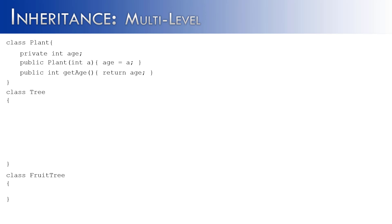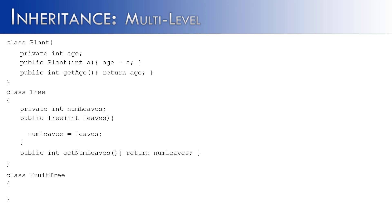Next, we create the tree class. The tree class has leaves, or number of leaves. It has a constructor which initializes leaves, and a getter or accessor which returns the number of leaves. Because we want to use inheritance here, we say that the class tree extends plant — meaning it uses the features of the plant class. Because of that, we run into an issue: we don't meet the needs of the plant class, which needs an age. Since the tree class doesn't need age itself, we make a call to its constructor using super(age), passing the variable up to the plant class.